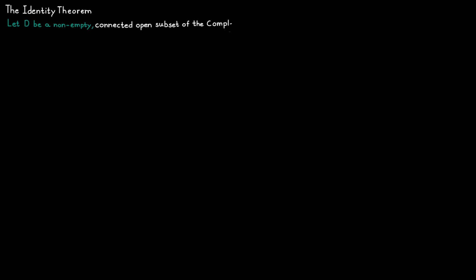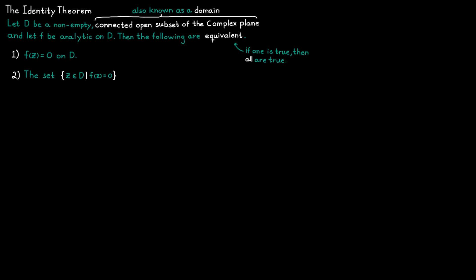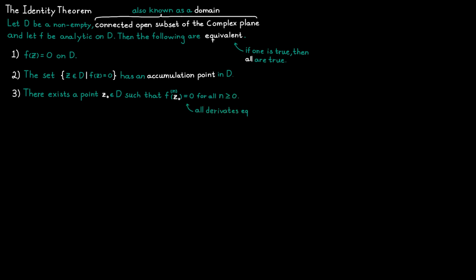The identity theorem states: let D be a non-empty connected open subset of the complex plane, also known as a domain, and let f be analytic on D. Then the following three statements are equivalent — meaning if one is true, all must be true. First, f is equal to zero on all of D. Second, the set of all zeros of f inside D has an accumulation point in D. Third, there exists a point z₀ inside D such that all derivatives of f evaluated at z₀ equal zero.